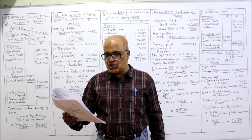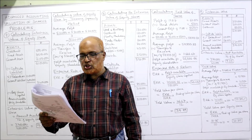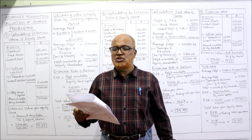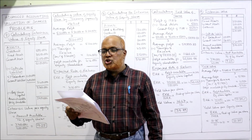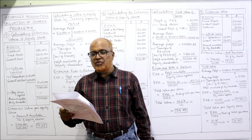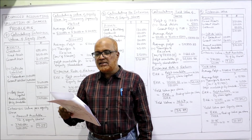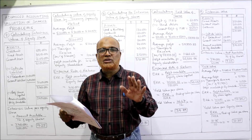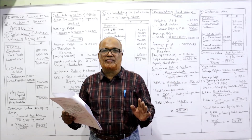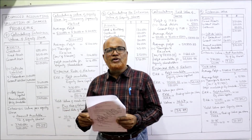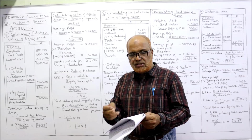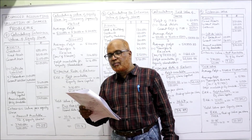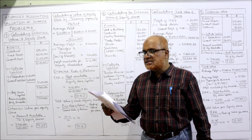Notes: share capital — 10,000 equity shares of Rs. 10 each = 1 lakh. Reserves and surplus — general reserve and P&L account. Short term provisions consist of provision for taxation and workman's saving account — both are outside liabilities, so we should take them under outside liability. Tangible assets: land and building 70,000; plant and machinery 70,000.